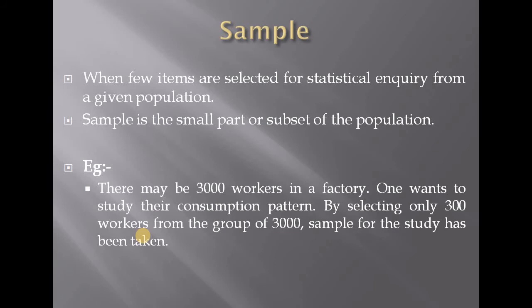The next concept is sample and sampling method. When a few items are selected for a statistical inquiry from a given population, that selection is called a sample. A sample is a subset of the population, or a small part of the population. When few items are selected from a population for statistical inquiry, that is a sample.